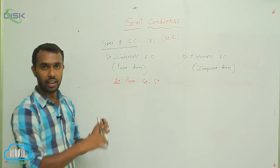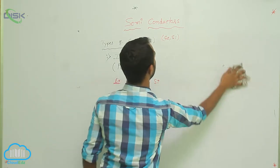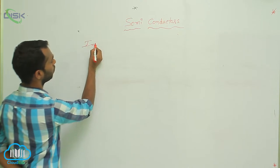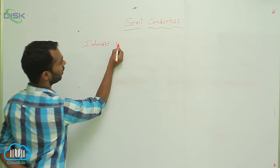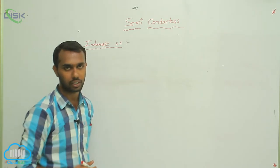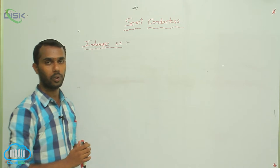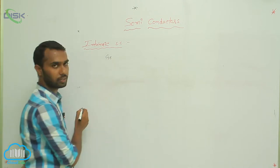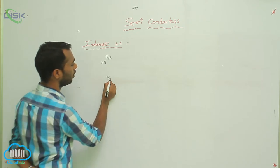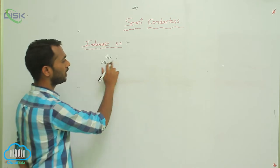To explain intrinsic semiconductors, I am taking germanium as an example. What is the atomic number of germanium? Germanium atomic number is 32. For silicon, the atomic number is 14. Now let's write the electronic configuration for each.